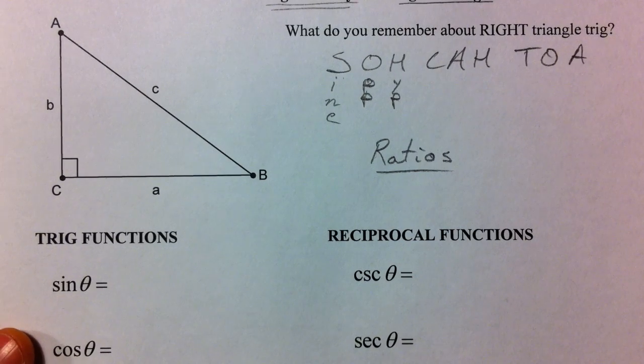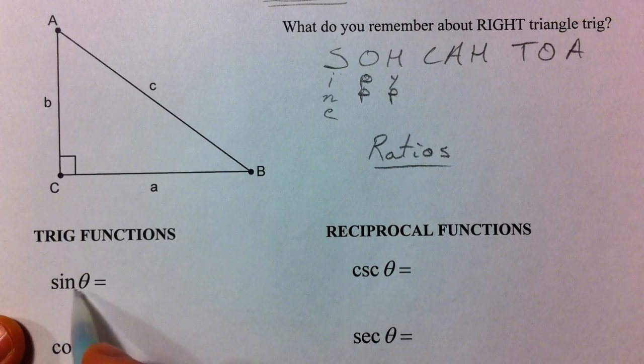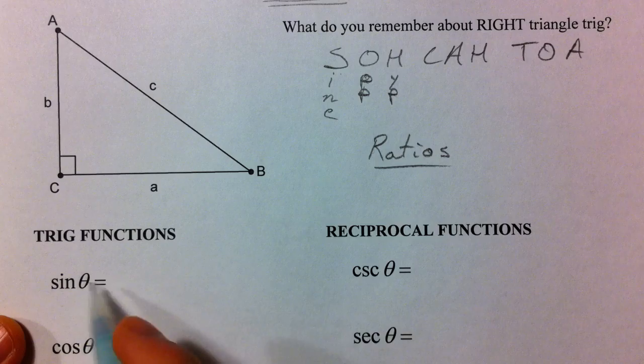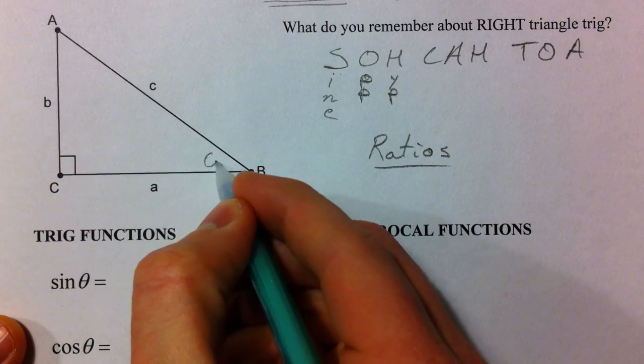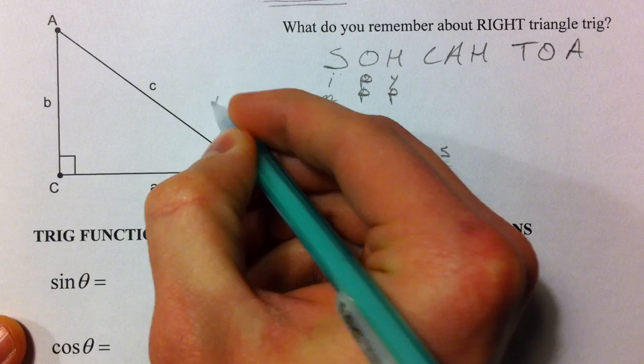Whenever you have the sine, you're talking about the angle. Sine of an angle. Let's say this little symbol here is called a theta, which is just a Greek letter. You probably see it quite a bit.